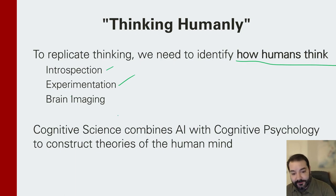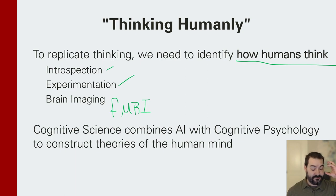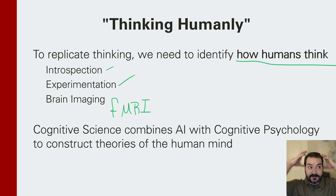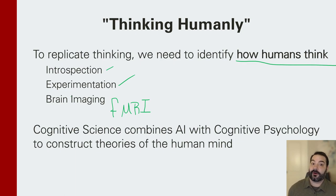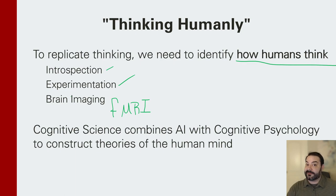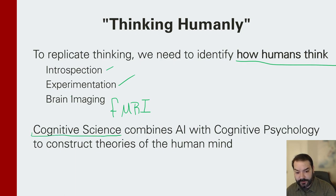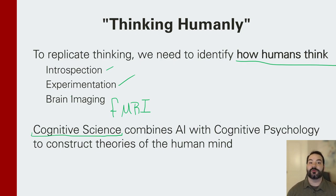One more interesting thing happening in the world these days is FMRI scans, which are now thinking about how humans think on a very realistic level. We have neurons firing in our brain and sending electrical signals. We can put a cap on our head and map out which parts of our brain are activating when shown the color red, pink, or blue. Is that how humans think — just neurons firing? That's where we get into cognitive science, looking at cognitive psychology and AI to develop theories on how the human mind operates.